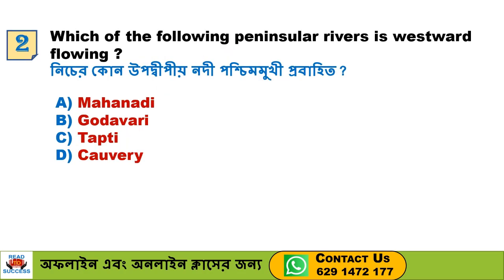Next question: Which of the following peninsular rivers is westward flowing? A. Mahanadi, B. Godavari, C. Tapti, D. Kaveri. The correct answer is C, Tapti.